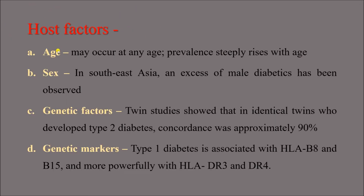Regarding host factors: age — diabetes may occur at any age but prevalence steeply rises with age. Gender — in Southeast Asia, an excess of male diabetes has been observed. Genetic factors — twin studies showed that in identical twins who develop type 2 diabetes, concordance was approximately 90%. That means if one identical twin has diabetes, the other twin is also expected to have diabetes in 90% of cases.